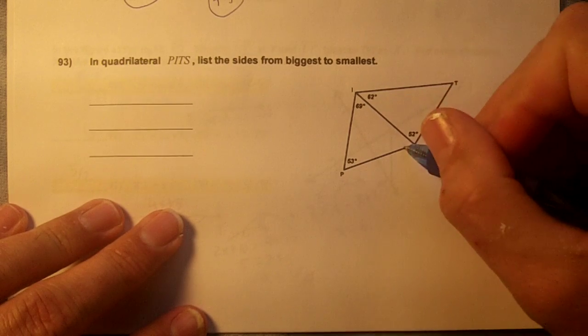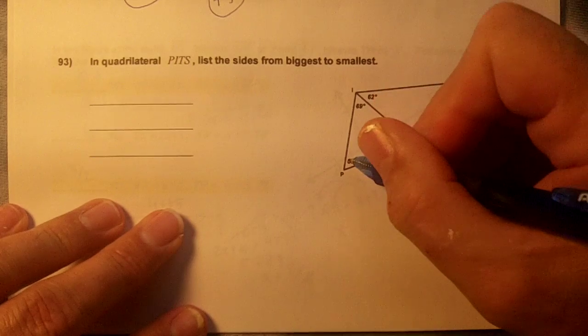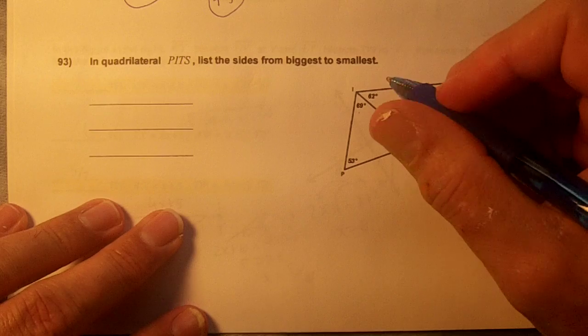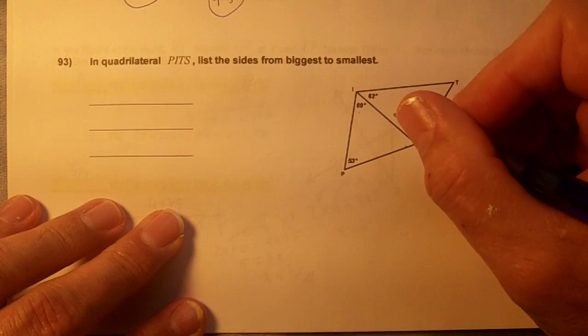Okay, we need to get this angle. 69 plus 53 is 100 and 10, 122. 180 minus 122 is 58.